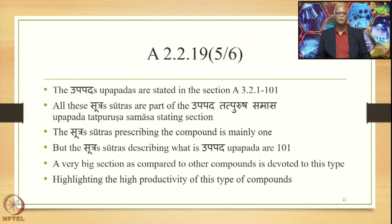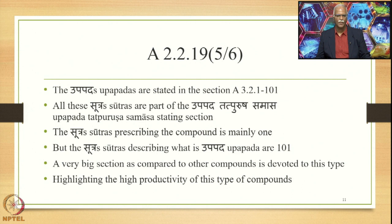The Upapadas are stated primarily in the section 3.2.1 to 3.2.101. They are stated elsewhere also, but in this course we will focus on this particular section. All these Sutras are part of the Upapada Tatpurusha Samasa stating section. The Sutra prescribing the compound is mainly one, but the Sutras describing what is Upapada are 101 primarily — a very big section compared to other compounds — highlighting the high productivity of this type.